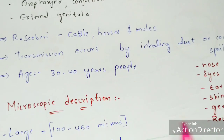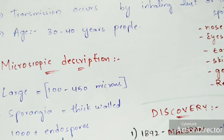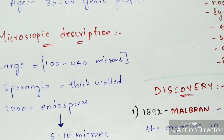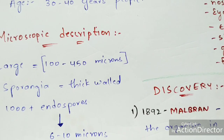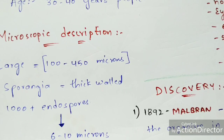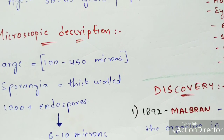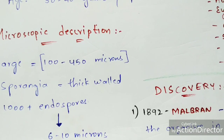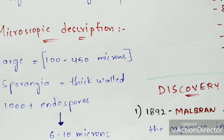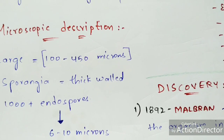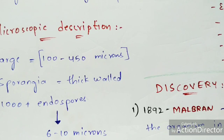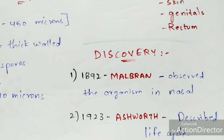Regarding microscopic description, the causative organism is very large — its size ranges from 100 to 450 microns. The sporangia are thick-walled, and inside the sporangia, thousands of endospores are present. Each endospore has a size range of 6 to 10 microns.